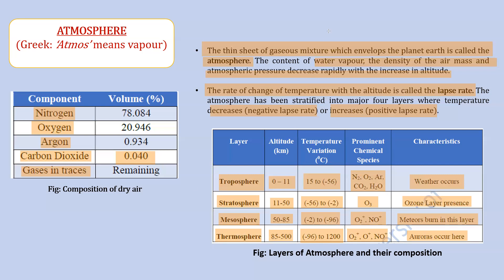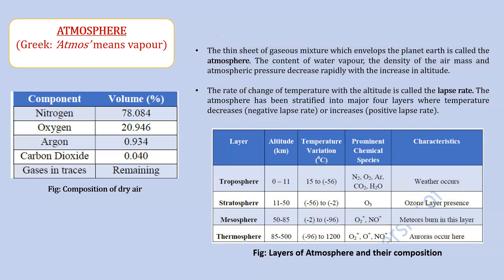In summary for the atmosphere: we should know the definition, the components and their percentage composition, how water vapor content, density, and pressure vary with altitude, what lapse rate is, the four layers of the atmosphere, which layers have negative versus positive lapse rates, and the characteristics of each layer.